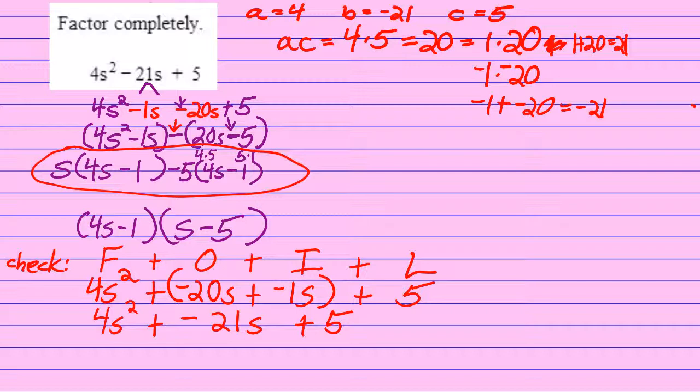And whenever I add a negative 21s, that's just like subtracting 21s. So I'll write it that way, because that's the normal way to write it. 4s squared minus 21s plus 5.